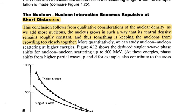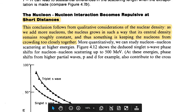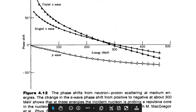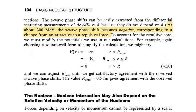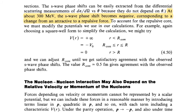This conclusion follows from qualitative consideration of the nuclear density. As we add more nucleons, the nucleus grows in such a way that its central density remains roughly constant, and thus something is keeping the nucleons from crowding too closely together. At about 300 MeV, the s-wave phase shift becomes negative, corresponding to a change from an attractive to repulsive force.